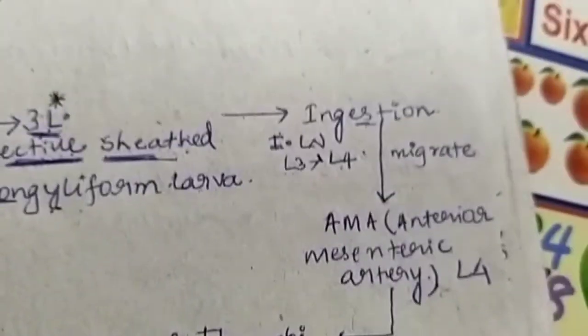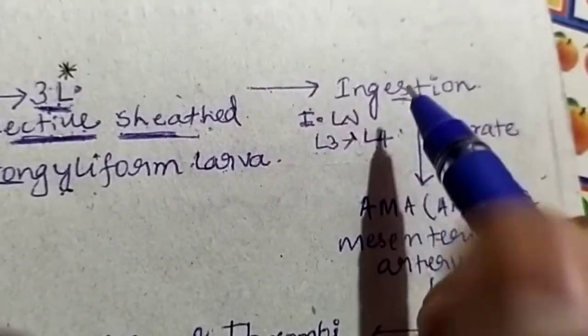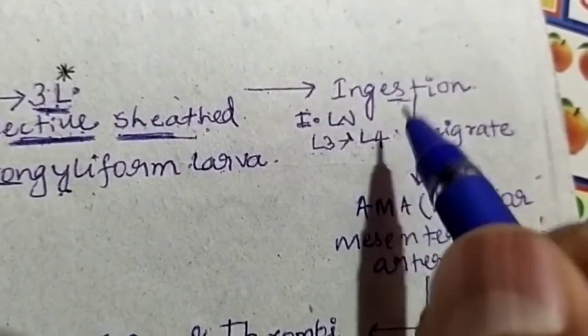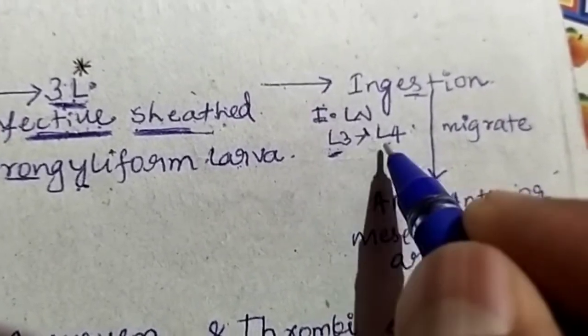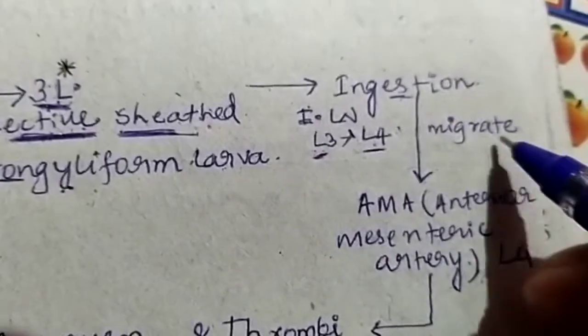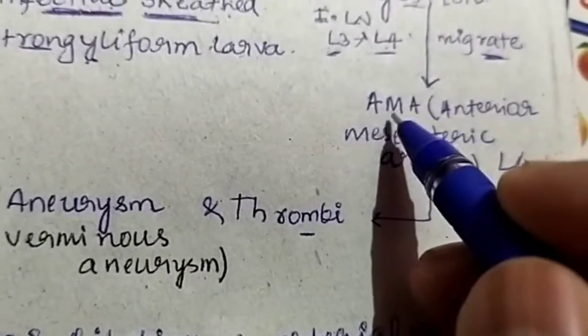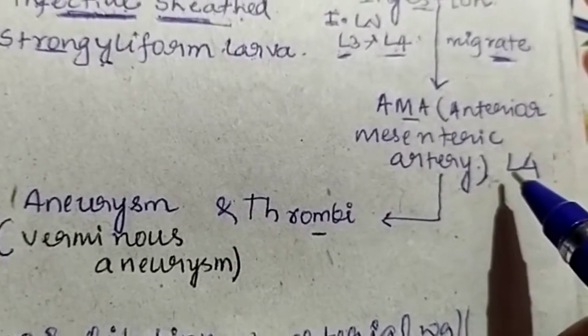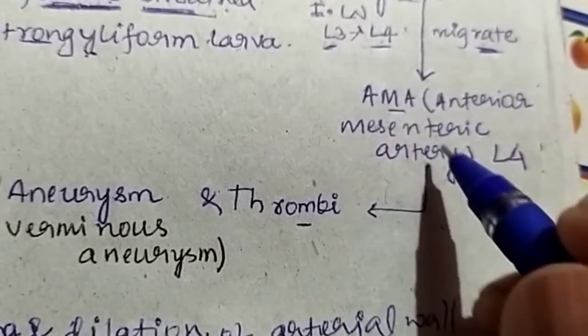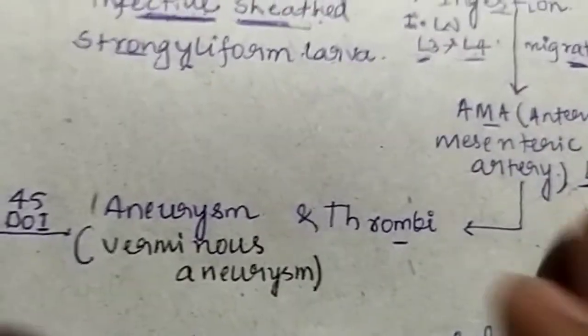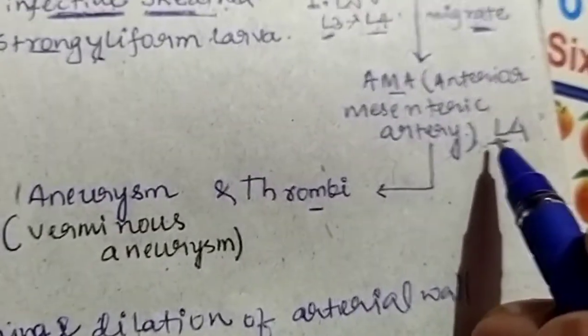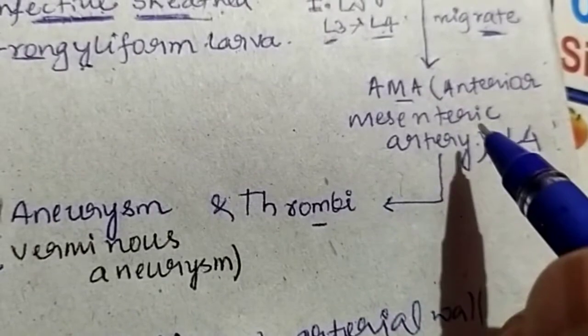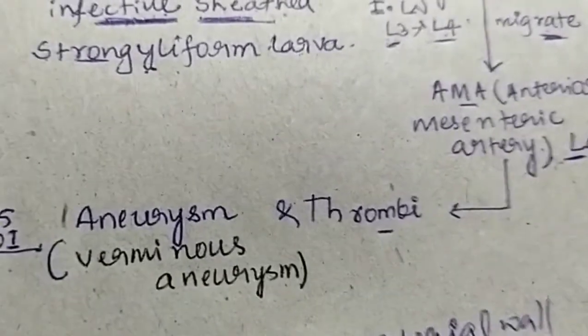After entering the host, they penetrate the intestinal wall. During penetration, L3 molts to form L4. They start migrating in the intestinal wall and enter into the anterior mesenteric artery.